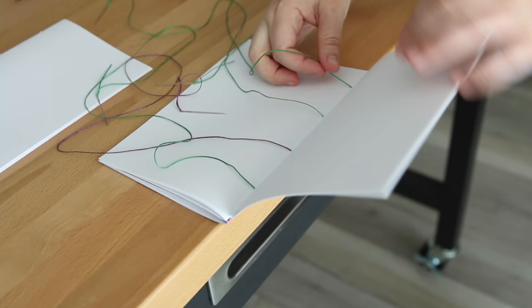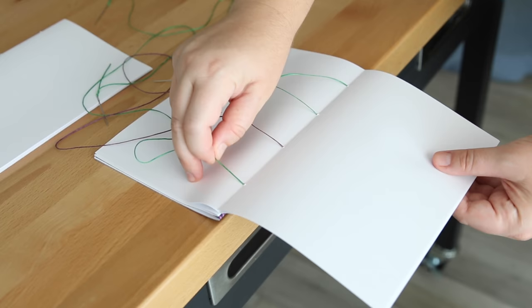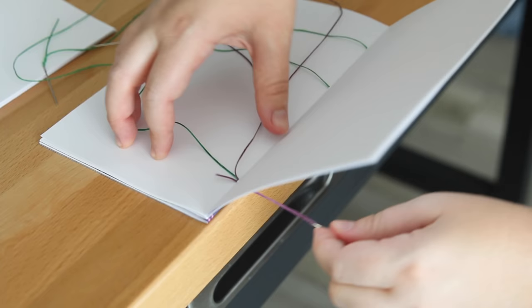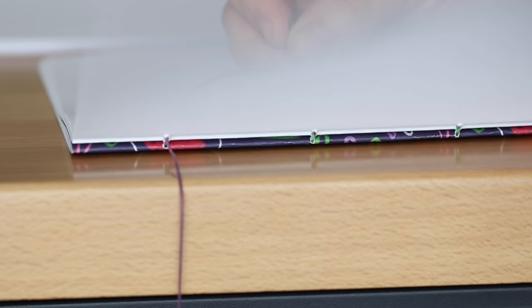As you work, you might want to take a second to tighten the threads so there's no looseness, but don't pull it too tight that it rips through your paper. Inside each signature, I'm doing the same thing on each section, crossing over the threads so that they come out on the opposite side.